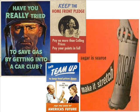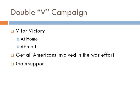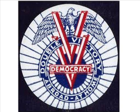Propaganda helped push rationing and keep Americans supporting the war effort: 'Have you really tried to save gas?' 'Stretch your sugar.' 'Keep the home front pledge — only buy with ration stamps.' A lot of the same things we saw in World War I came back. The idea behind this was the Double V campaign — the Vs stand for victory at home and victory abroad. You can help win the war by supporting the war effort and doing what the government asks. The goal was to pull all Americans in, not just the military, to support the war effort.